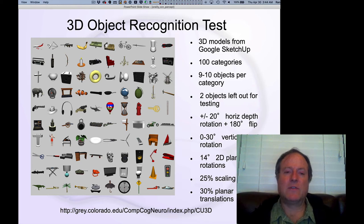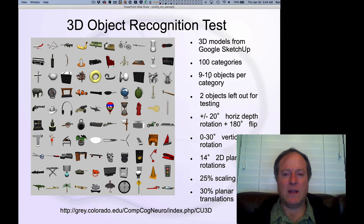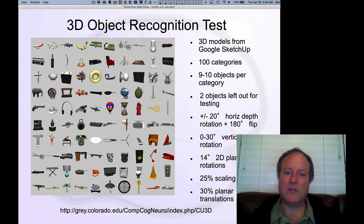This larger scale version of the model was tested on a hundred different objects using a 3D object dataset that we curated based on models from Google SketchUp. You can download this if you're interested. We left out two objects from each category — we had eight bananas we trained on and two bananas we held out that were maybe green or a slightly different shape.